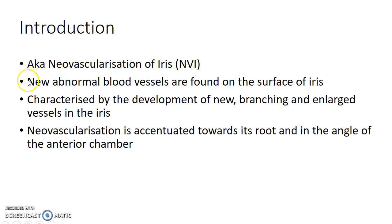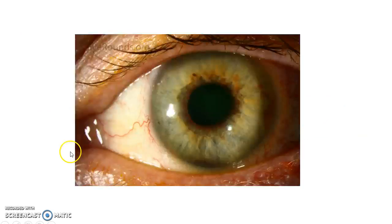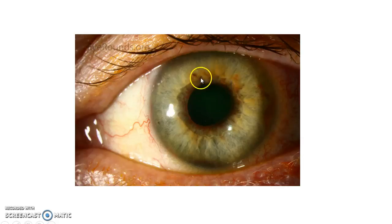In Rubiosis Iridis, new abnormal blood vessels are found on the surface of the iris. It is characterized by the development of new branching and enlarged vessels in the iris, accentuated towards the root of the iris and in the angle of the anterior chamber. This is how a patient with Rubiosis Iridis presents — note the new abnormal blood vessels in the iris.